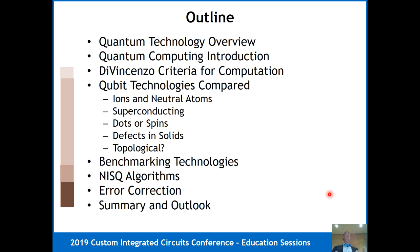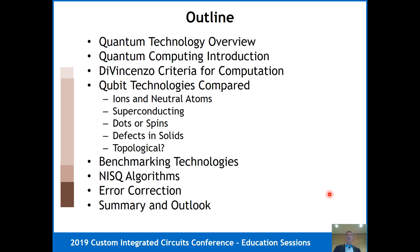Once we do that, we'll have a way to compare different qubit technologies — ions, superconducting qubits, spins or dots, defects, etc. I'll talk about how we benchmark them, and then some noisy intermediate-scale quantum system algorithms, because that's the point we are at. It's not really big integrated circuits yet, but handfuls of qubits. I'll also talk about error correction and the road to larger machines.